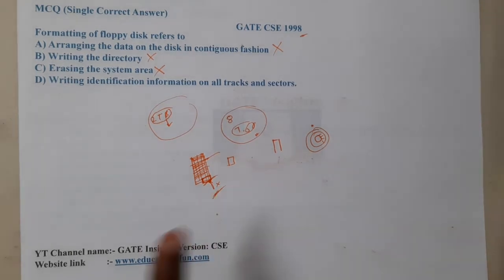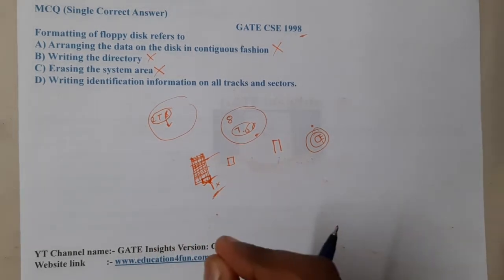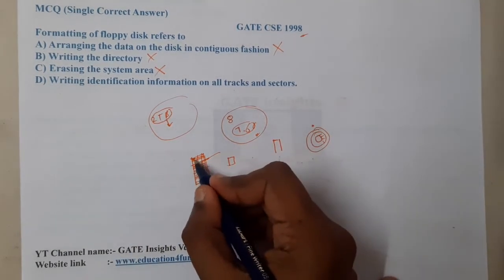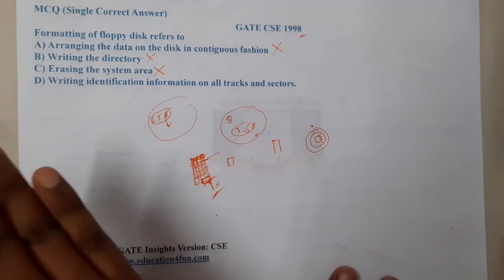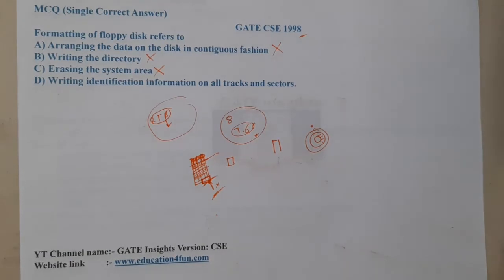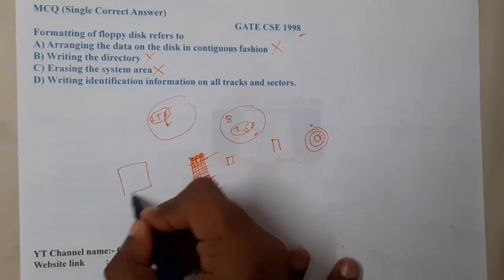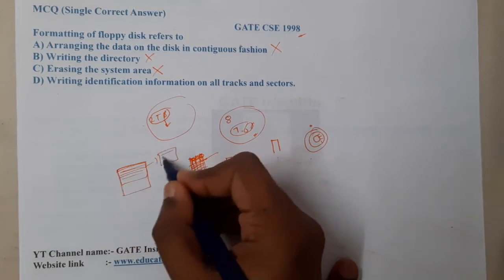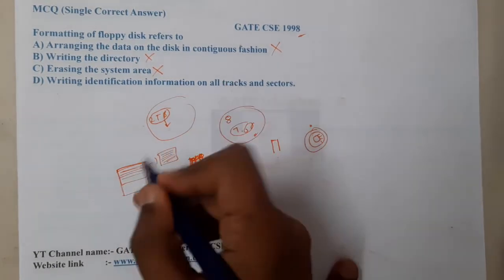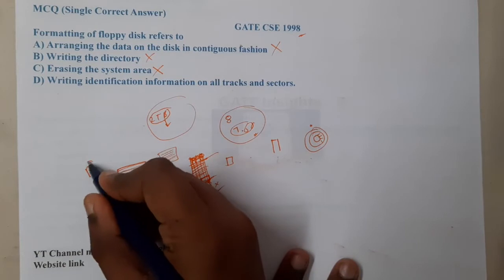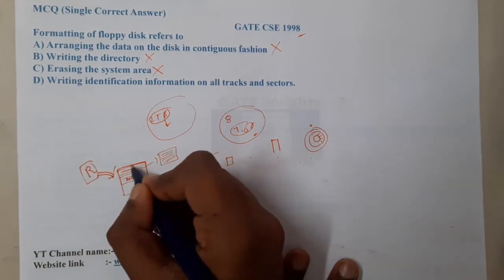Whenever you perform a traditional (non-quick) format, which takes a really long time, it places zeros — or ones — across your whole disk, indicating the disk is completely empty. However, a quick format does not delete all the files; it just adds those locations to the free space map and marks them as free, while the actual data remains on the disk.